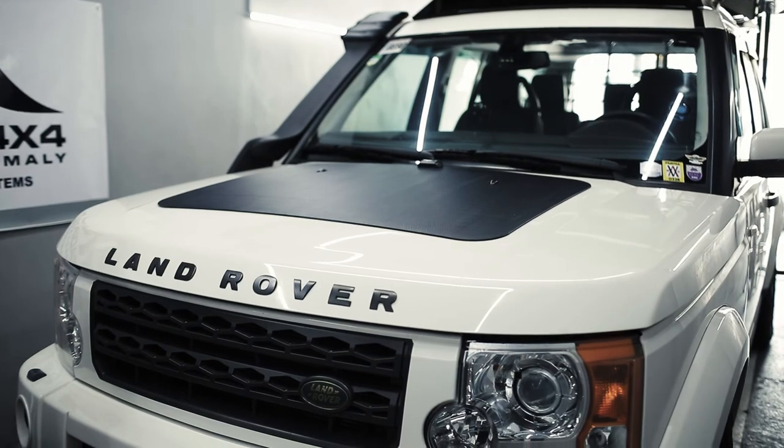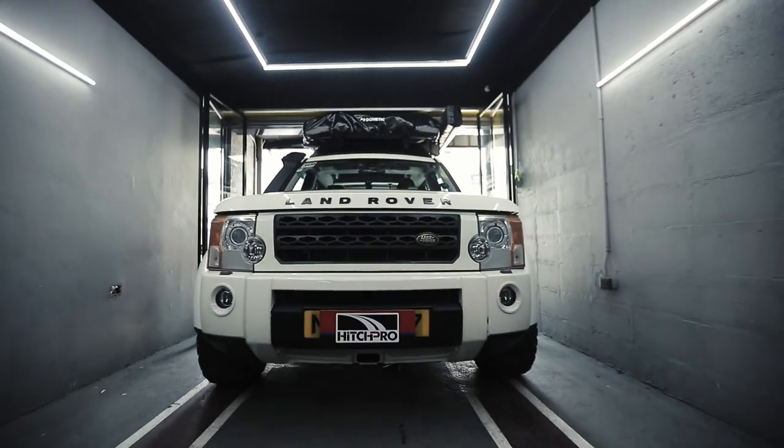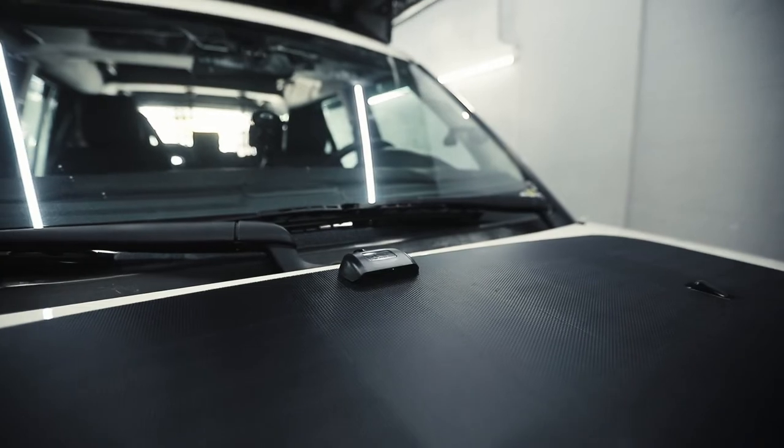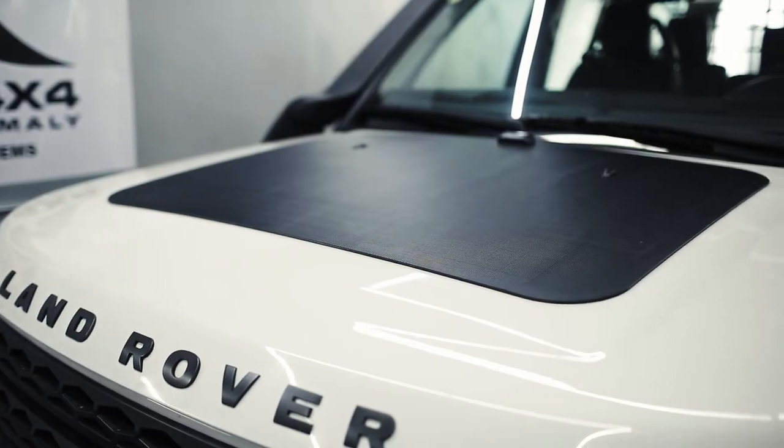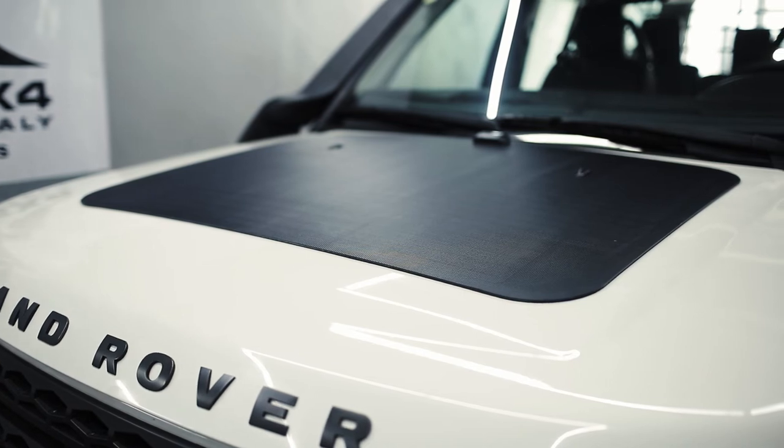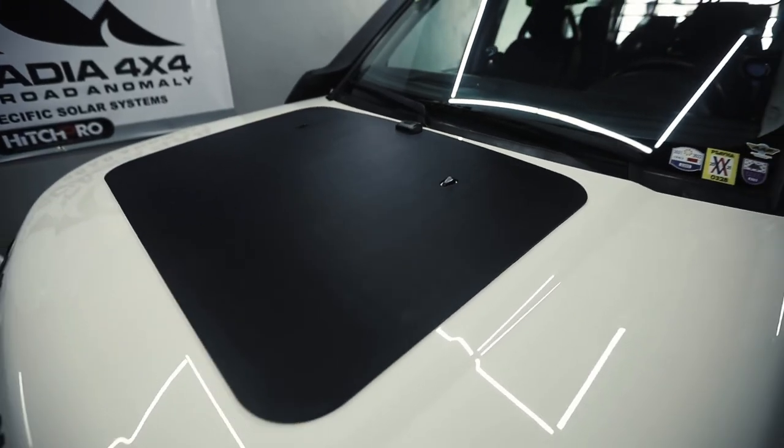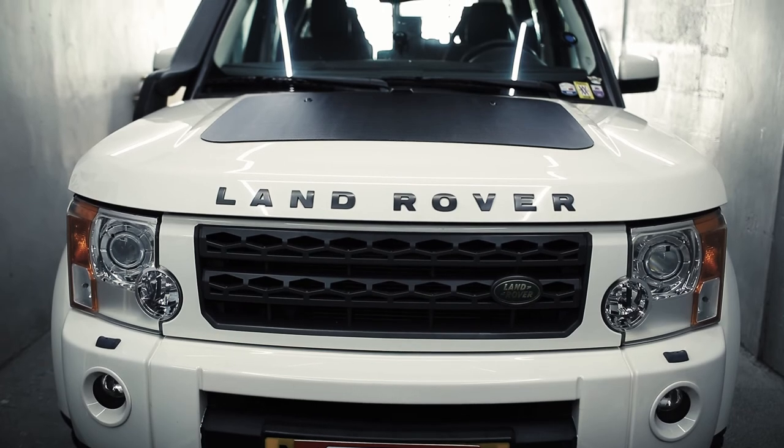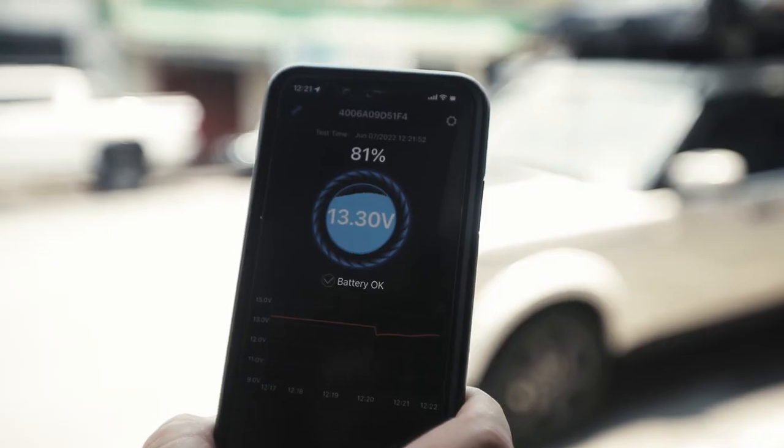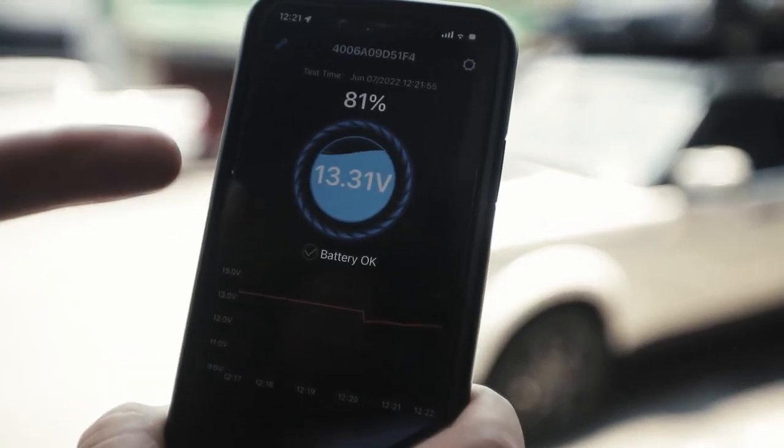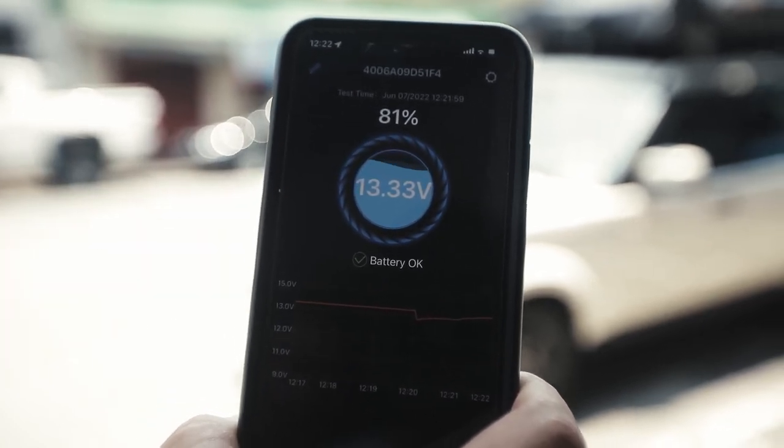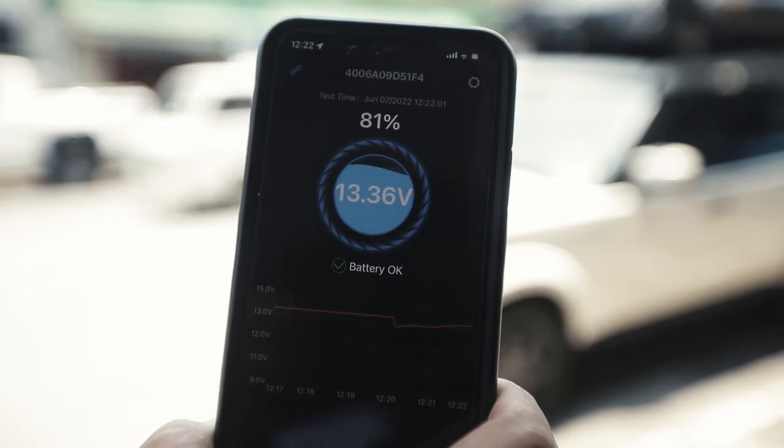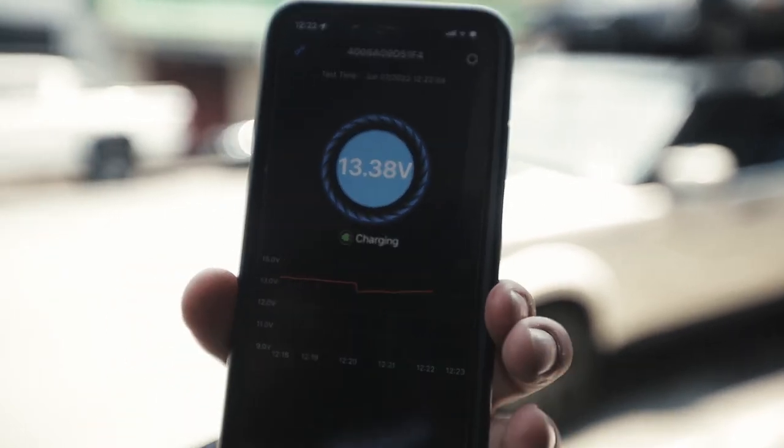I've installed a battery monitoring app on my Discovery 3. As you can see, with the engine off, the battery is still receiving charge. The voltage is climbing—13.3, there we go, 13.37. So even with the car off, your battery is getting tendered.